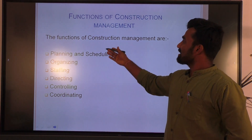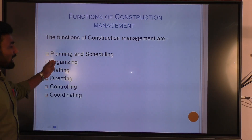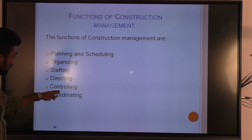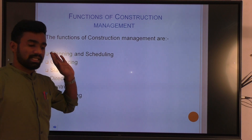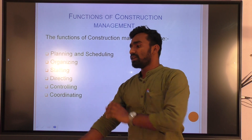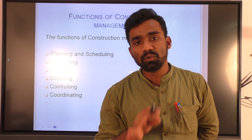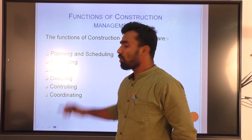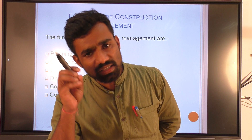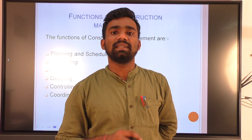There are some functions of construction management. The first one is planning and scheduling. Others include organizing, staffing, directing, controlling, and coordinating. Planning and scheduling: planning means what to do and how to do; scheduling means when to do it. You should fix the time when that activity or event will be done at the site.